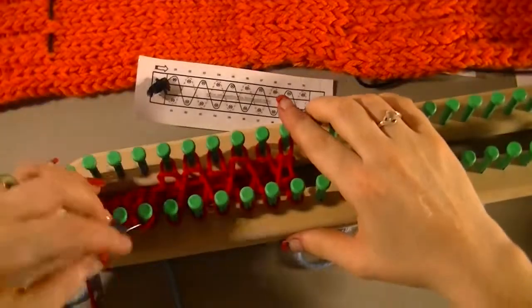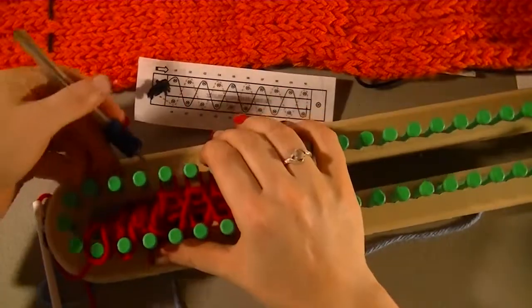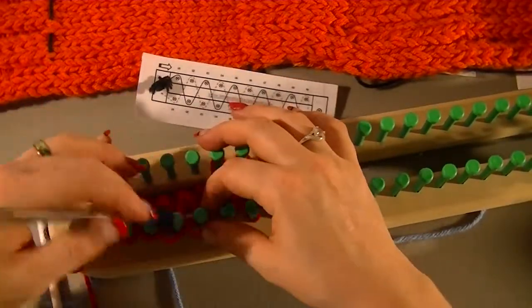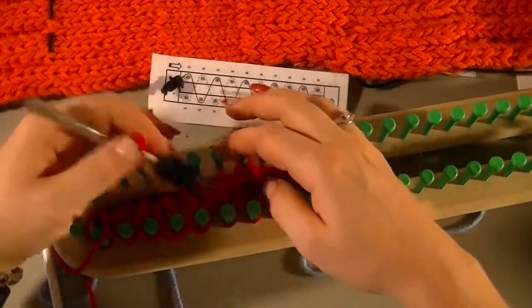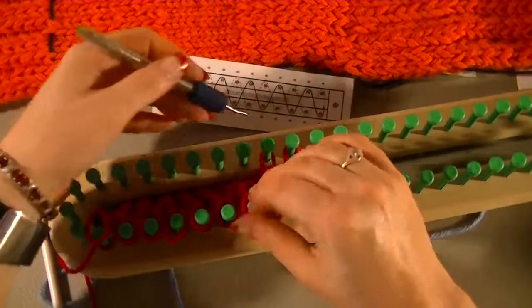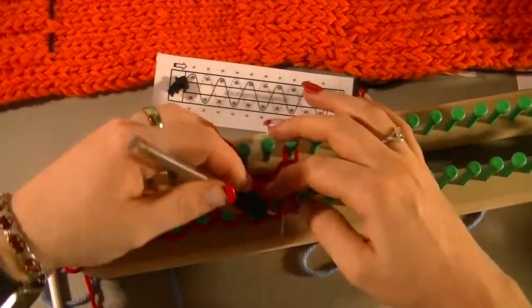So at this point we're taking those loops from the one side, put them on to that opposite side, and do this all the way down to the last peg.